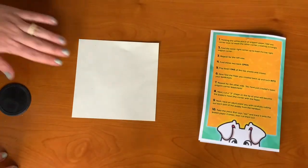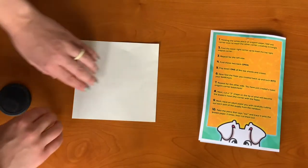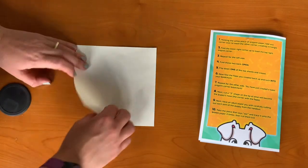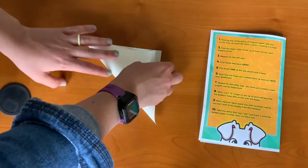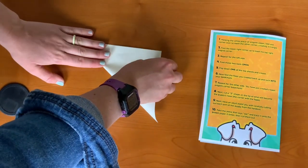Step one, holding the white piece of origami paper, fold one corner over to meet the other, making a triangle.